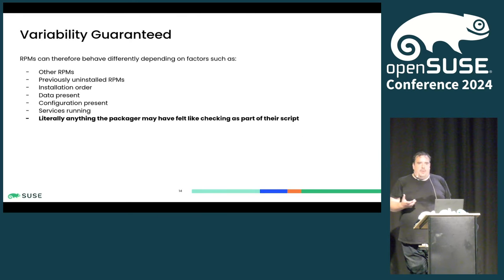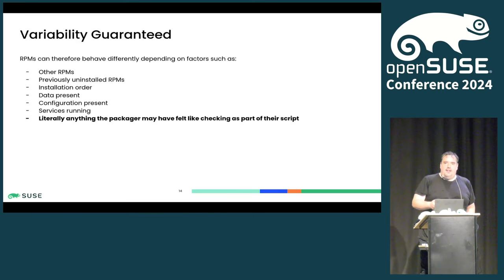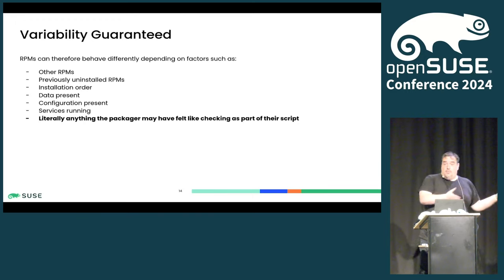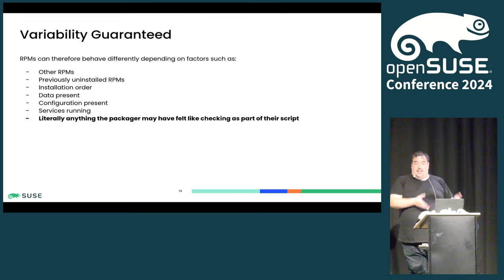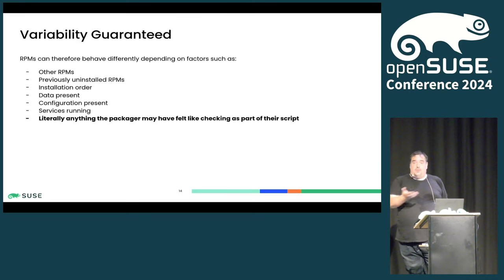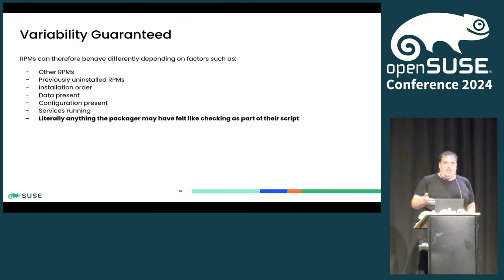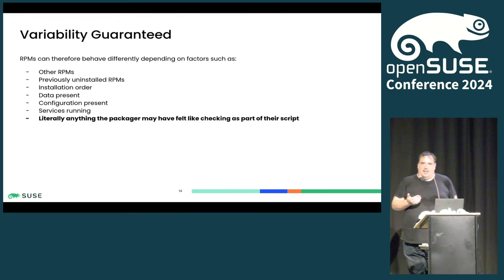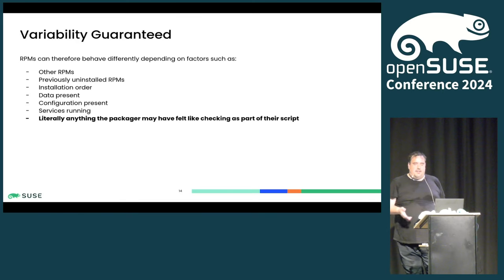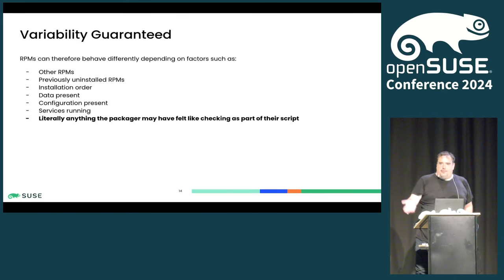The only guarantee you really have with RPMs is that they can be variable — they can behave differently. Even when we build them reproducibly, they aren't necessarily going to run reproducibly. Those scripts in those RPMs are going to change their behaviour based on things like: was this other RPM already installed? Is this other binary here? We have a ton of if-statements — if this is installed, do this. What's been uninstalled? What configs are still lying around? Installation order matters too. Quite often we do our best to declare ordering with RPM dependencies, but if we accidentally forget a 'requires', you can easily have an RPM do something totally different depending on which order Zypper decided to install things.